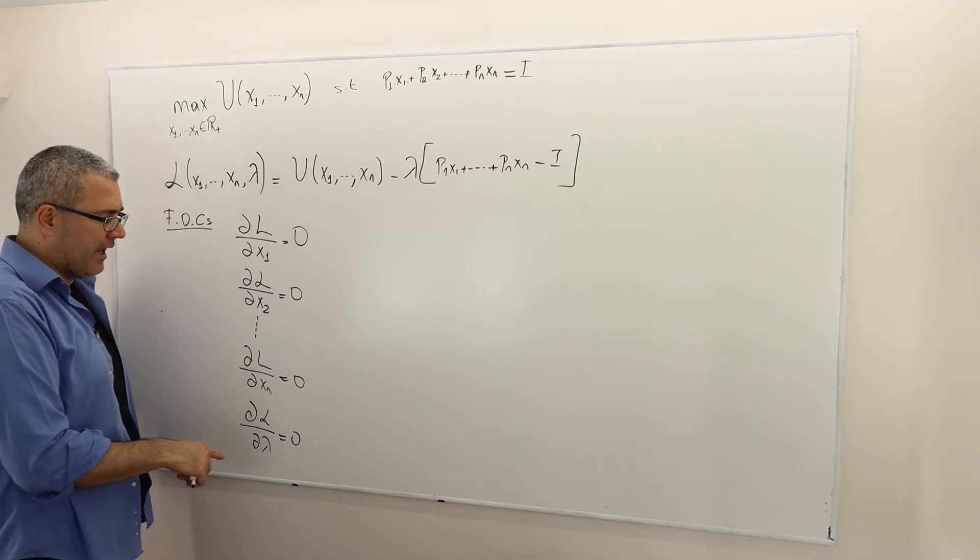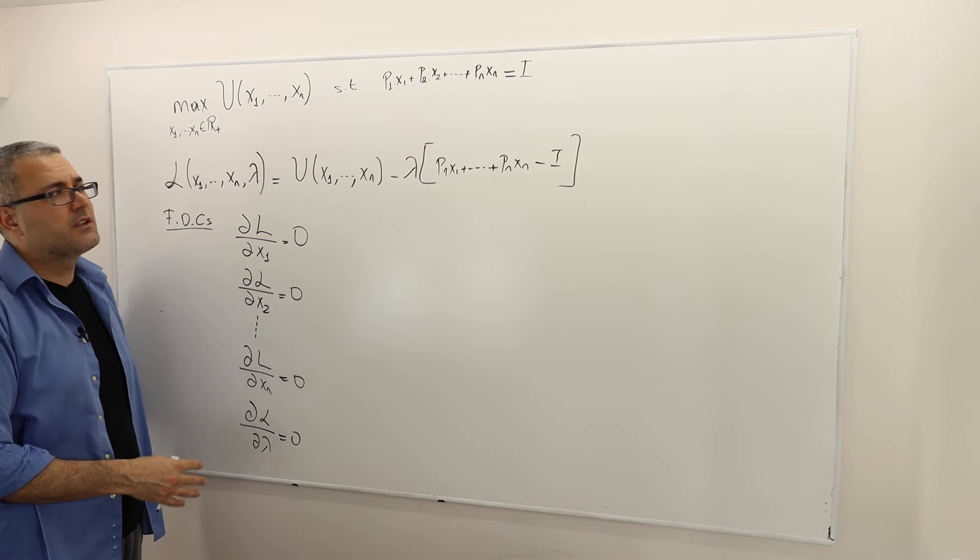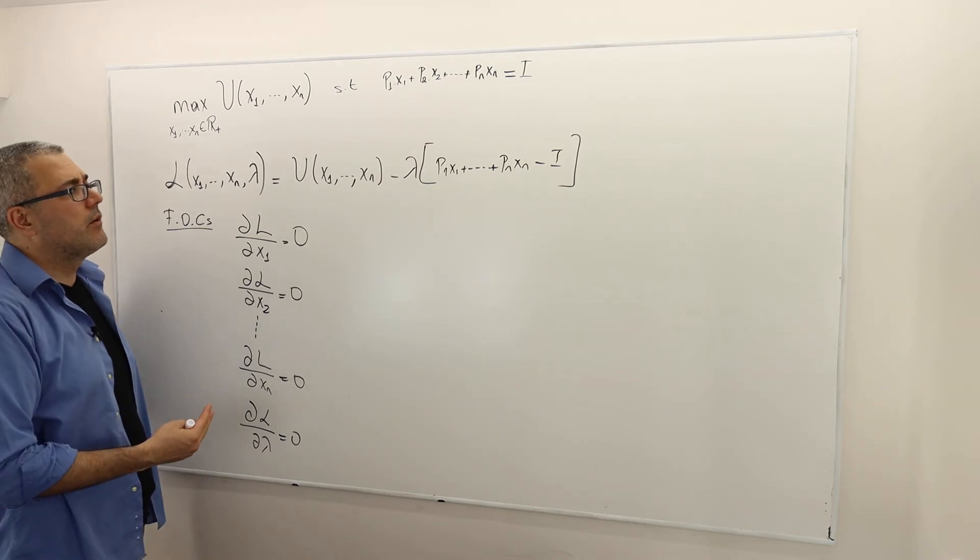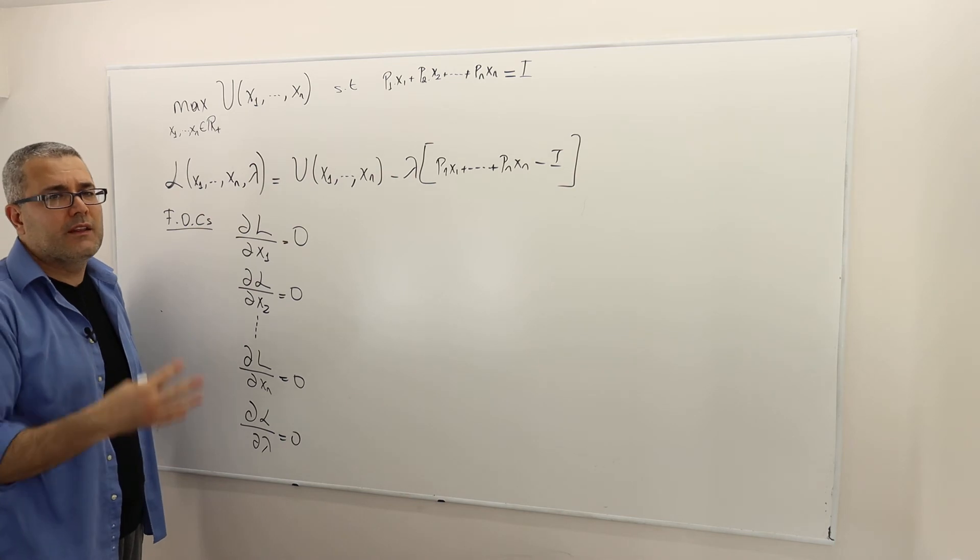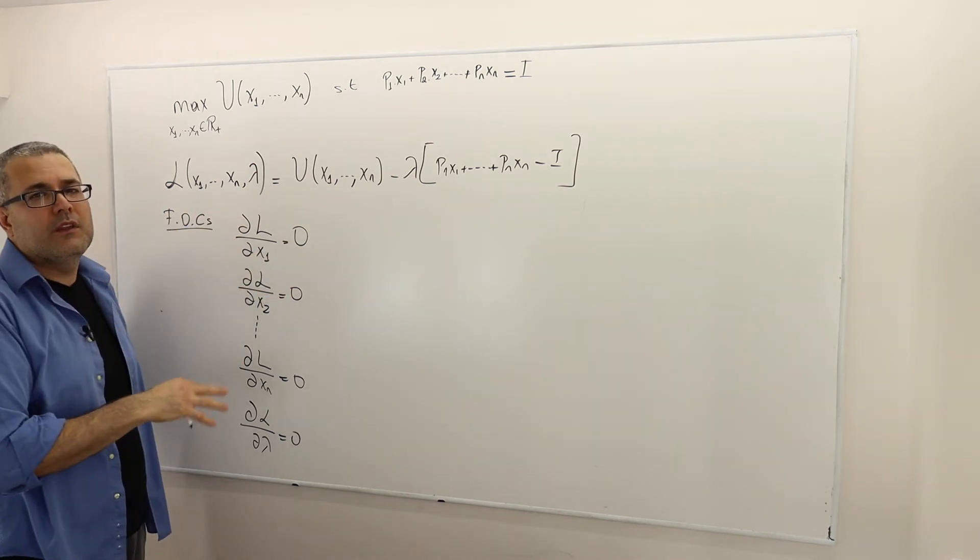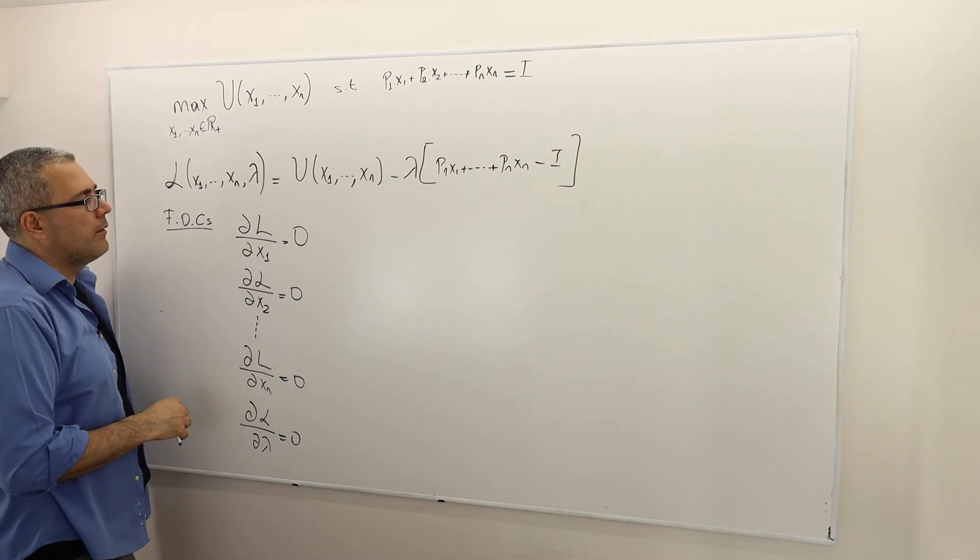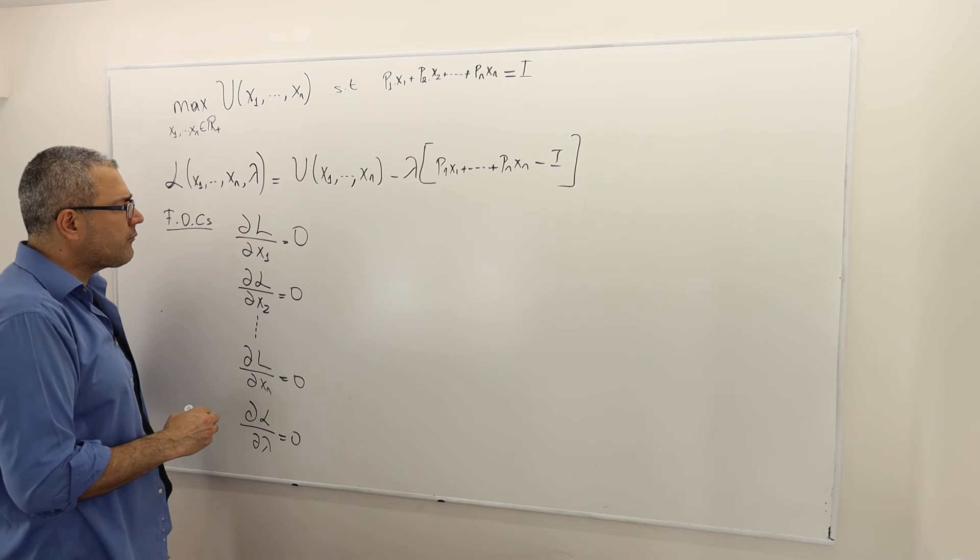You have to check the second order conditions. Well, obviously, when we have n plus 1 variables, checking second order conditions is not so easy. So instead, we're going to assume some nice utility functional form so that we're sure that the critical value is also the optimal point of this utility maximization problem.